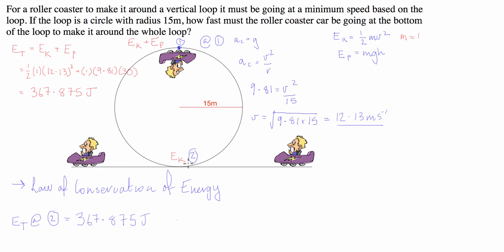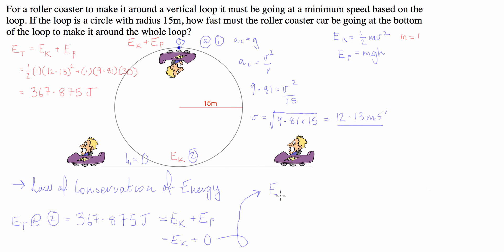At the bottom of the loop, the car's height is equal to zero — it's travelling along the ground — so it has no potential energy. That means the total energy of 367.875 must equal the kinetic energy plus potential energy, and since potential energy is zero, it's just equal to the kinetic energy.